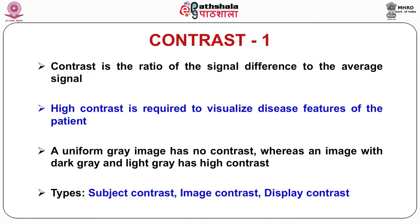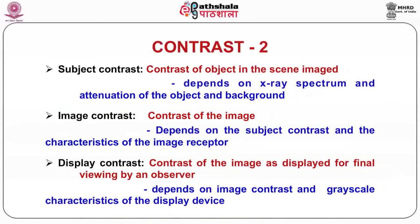Contrast is defined as the ratio of the signal difference between the object and the background to the average signal. In medical imaging, it is desirable to achieve high contrast to visualize disease features of the patient image. A uniform gray image has no contrast, whereas an image with dark gray and light gray has high contrast. There are three types of contrast: subject contrast, image contrast, and display contrast. Subject contrast is defined as the contrast of the object in the scene being imaged, and it depends on the X-ray spectrum and the attenuation of the object and background.